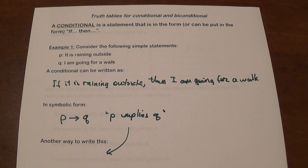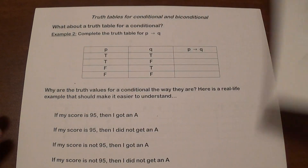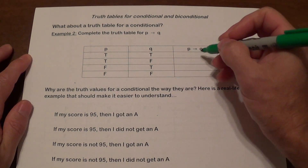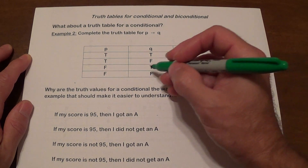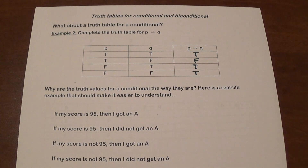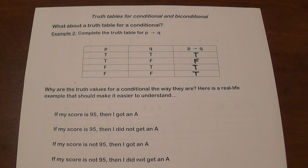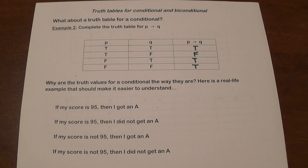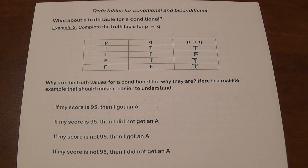Let's complete the truth table for P→Q. True-true gives true, true-false gives false, false-true gives true, and false-false gives true. To understand why, consider these statements: if my score is 95, then I got an A — that's true-true, obviously a true statement. If my score is 95, then I did not get an A — that's true-false, which is clearly false.